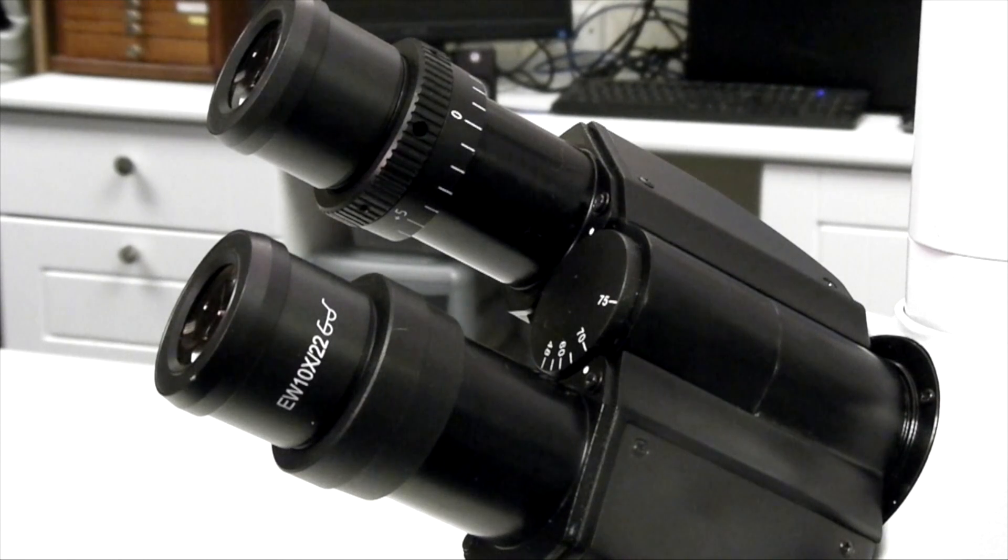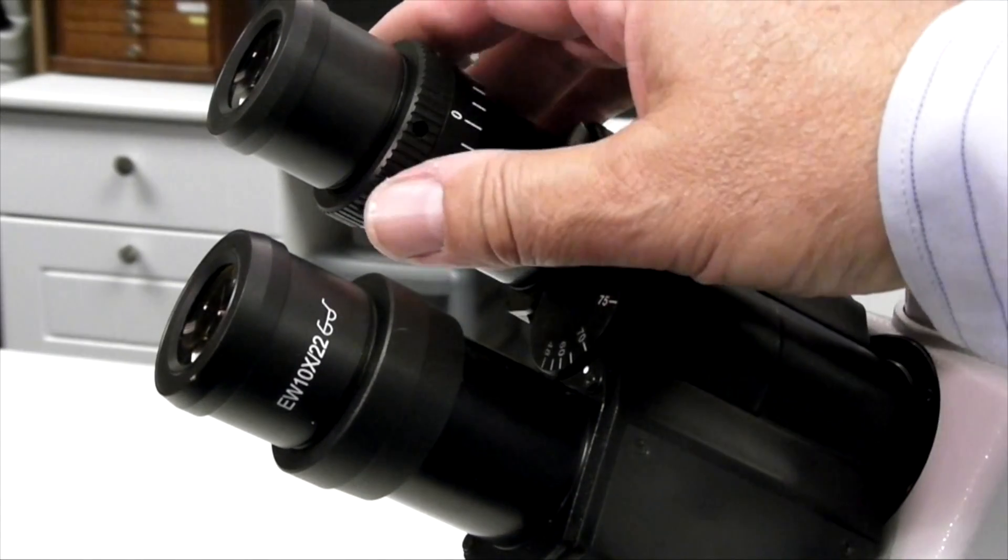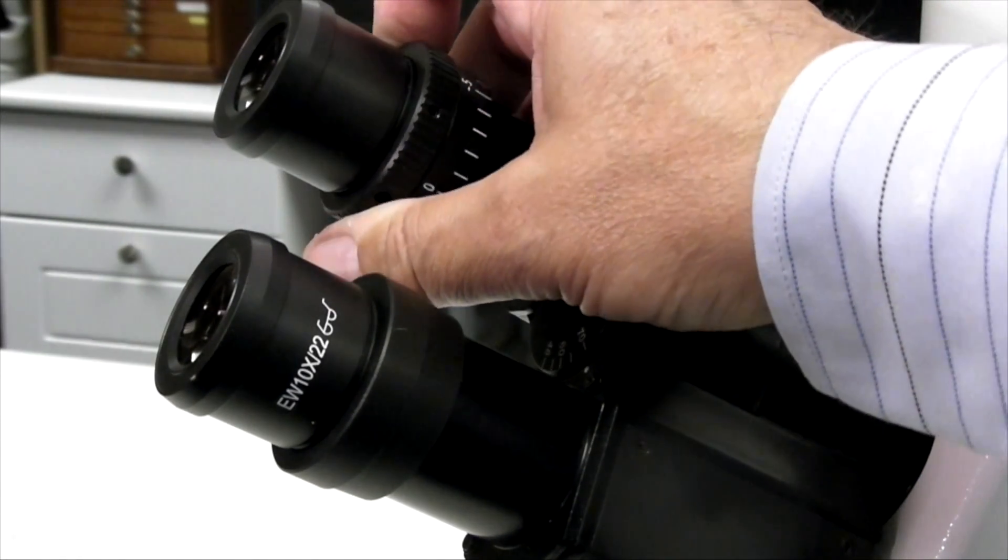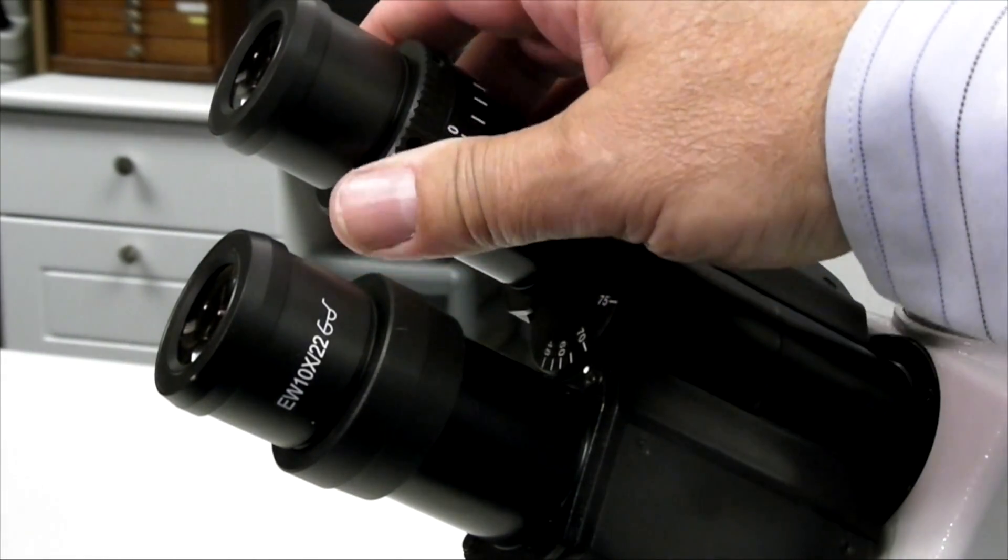Many individuals have eyes that focus differently. The eye tubes of most high power microscopes have one, often the left hand, which will focus independently of the other. To set these correctly, look through the fixed eye tube with the other eye closed.